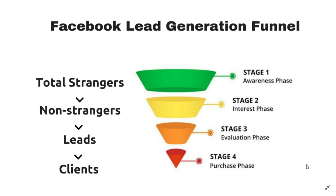Once that audience gets to a certain level — and you're constantly running these ads, not stopping and starting, because you're running them for a dollar a day, so it's not going to break the bank — once that audience builds up to a certain number, it is then and only then that you start offering your service. That's stage three, the orange phase, where you start doing your lead gen ads, actually asking for people's contact information or offering your service.